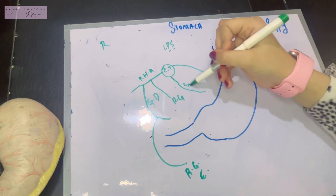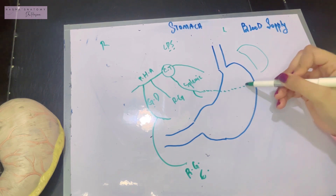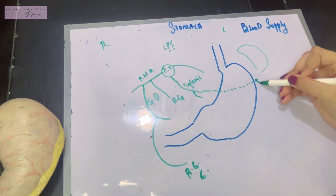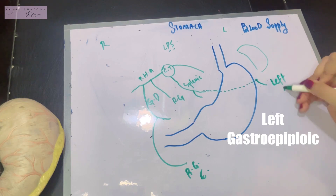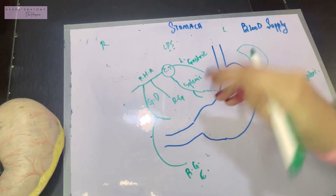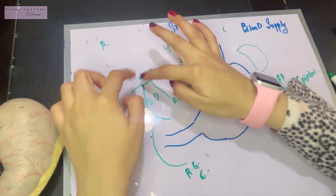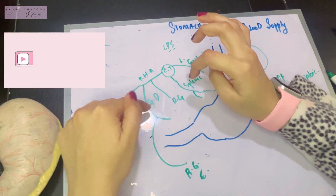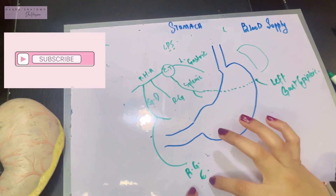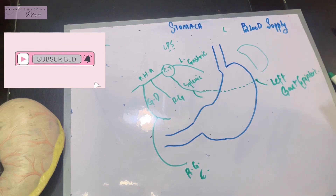Then we have the splenic artery — let's take it all the way to the spleen — and here it gives a branch known as the left gastroepiploic artery. So now we know the branches of everything: the celiac trunk gives LPS, the proper hepatic artery gives the right gastric and gastroduodenal, the gastroduodenal gives the right gastroepiploic, and the splenic gives the left gastroepiploic.